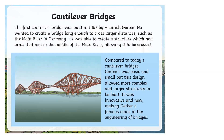Cantilever bridges: the first cantilever bridge was built in 1867 by Henrik Gerber. He wanted to create a bridge long enough to cross larger distances, such as the Main River in Germany. He created a structure which had arms that met in the middle of the river, allowing it to be crossed. Compared to today's cantilever bridges, Gerber's was basic and small, but this design allowed more complex and larger structures to be built. It was innovative, making Gerber a famous name in bridge engineering.